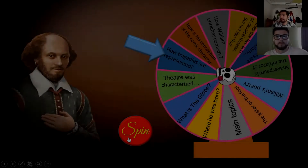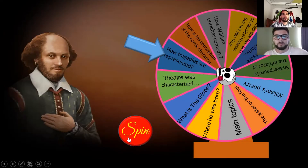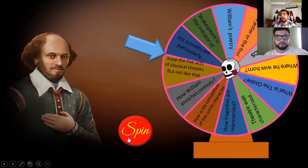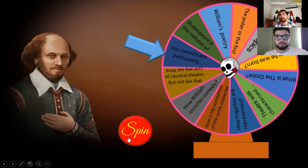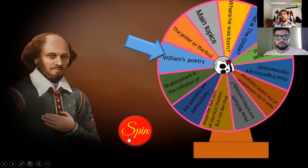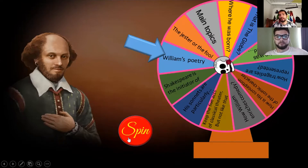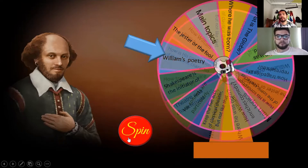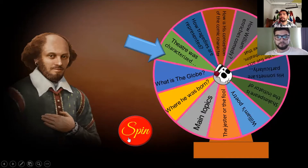Now we are going to explain how it works. First of all, you have to click on spin. The wheel is going to start to spin and then a topic will be chosen. Then you have to explain with your words what the topic is — for example, what is William's poetry. Let's start.